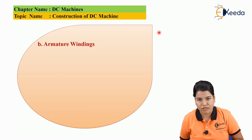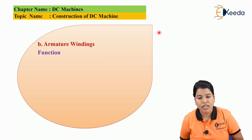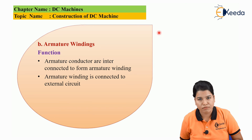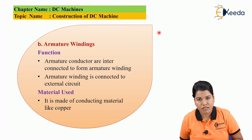Next is armature windings. Armature windings are a number of conductors or coils which are connected in series to form the armature winding. Armature conductors are interconnected to form the armature winding, and armature winding is connected to an external circuit. Armature winding is made up of conducting material like copper.